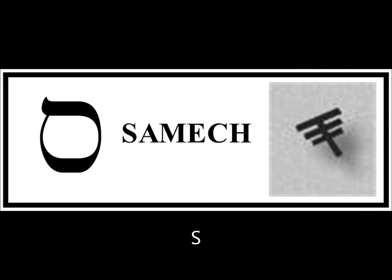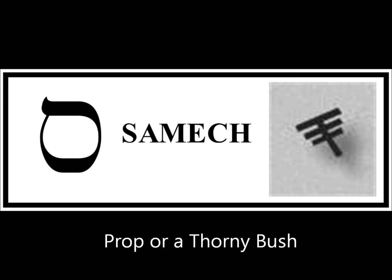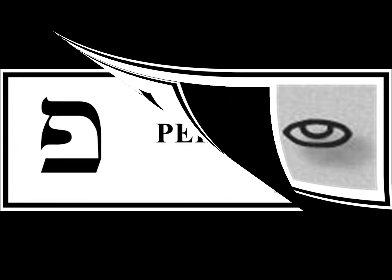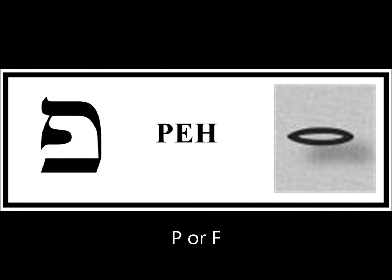Samech has an S sound. It has a numerical value of 60, and its pictogram is sometimes considered a prop or a thorn, like a thorny bush. Ayin is a silent letter. Its numerical value is 70, and its pictograph is of an eye. Pe, or Fe, can have an F or a P sound depending on where it appears in the word and the Masoretic markings. It has a numerical value of 80, also has a final form, and its pictograph is of a mouth.